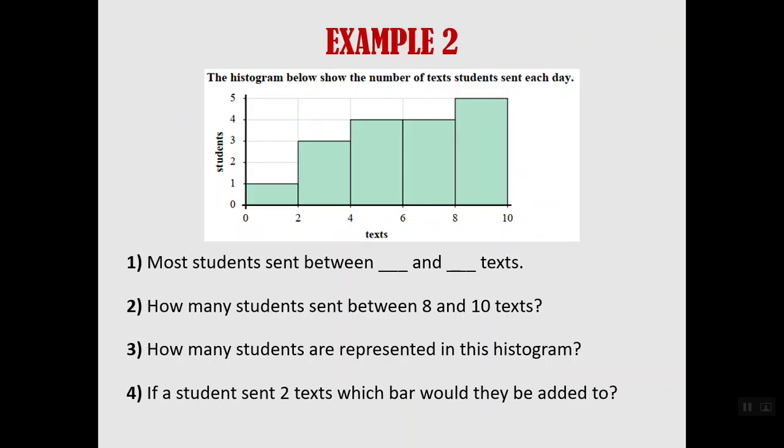Alright, example 2. Here's some questions. Now we've got a histogram that shows the number of texts that a student sends each day. This is obviously ridiculous and was created a long time ago because there's no way that a student would send only 4 texts in a day. But we're going to proceed anyway.